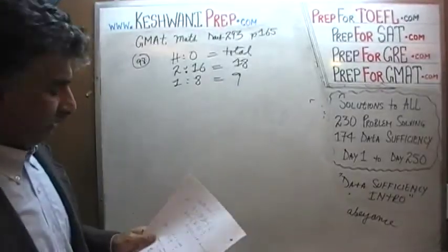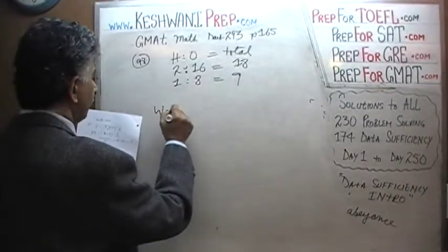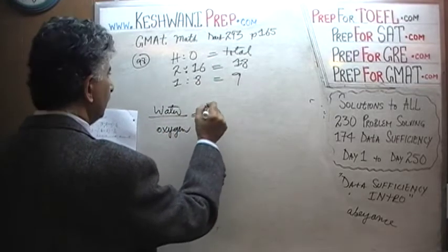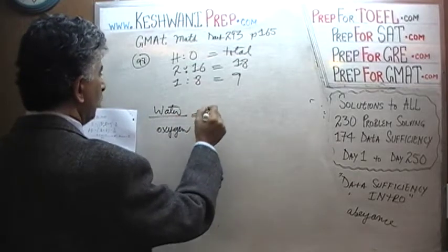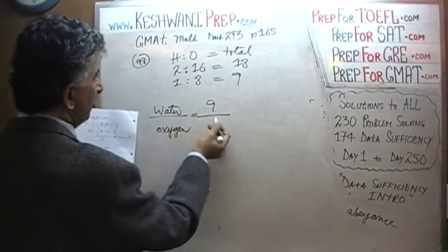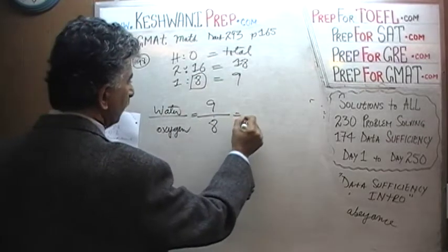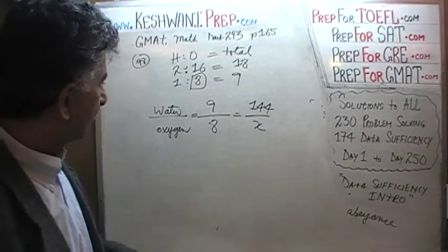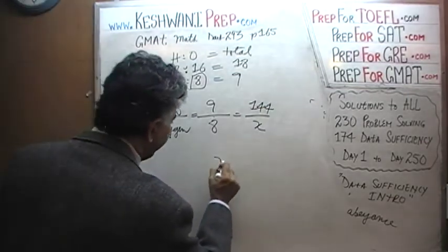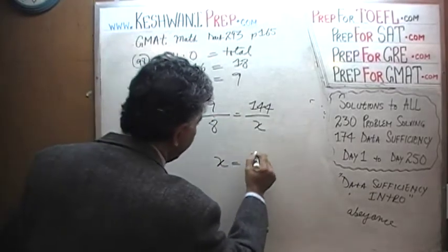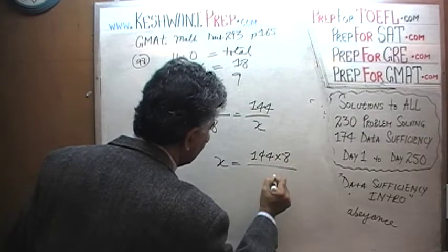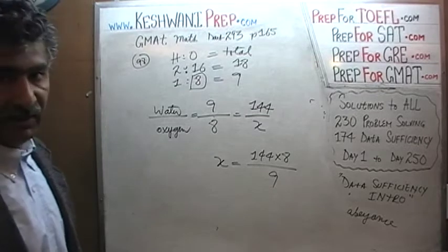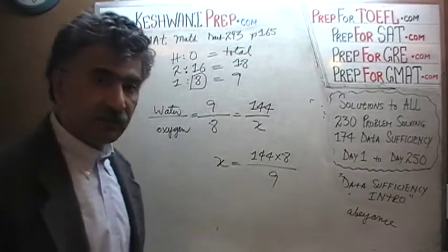To set it up as a proportion problem the question is, here is our water. Water is the total. The question is how much oxygen do we have? So we know that water, the water is 9 parts. Out of 9 parts water, oxygen is 8 parts. The question is how much oxygen do we have if we have a total of 144 grams of water. And that's all it is, solve for x. And x equals 144 times 8 over 9.